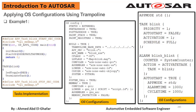The first situation: if the maximum number of activations as specified by the activation attribute has not been reached yet, the RTOS queues the activation request for later processing. The second situation: if the maximum number of activations has already been reached, then the system service returns E_OS_LIMIT as an error code.